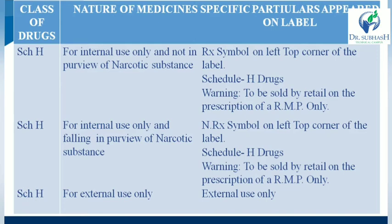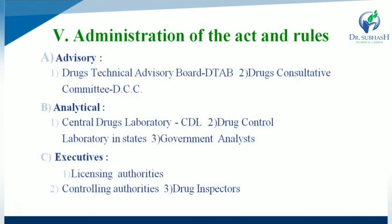The NRx or Rx symbol is mentioned on the top left corner of the label, along with the Schedule H drug designation and the warning: 'It should be sold by retail on the prescription of a registered medical practitioner only.' If a Schedule H drug is for external use only, the label must mention 'external use only.'